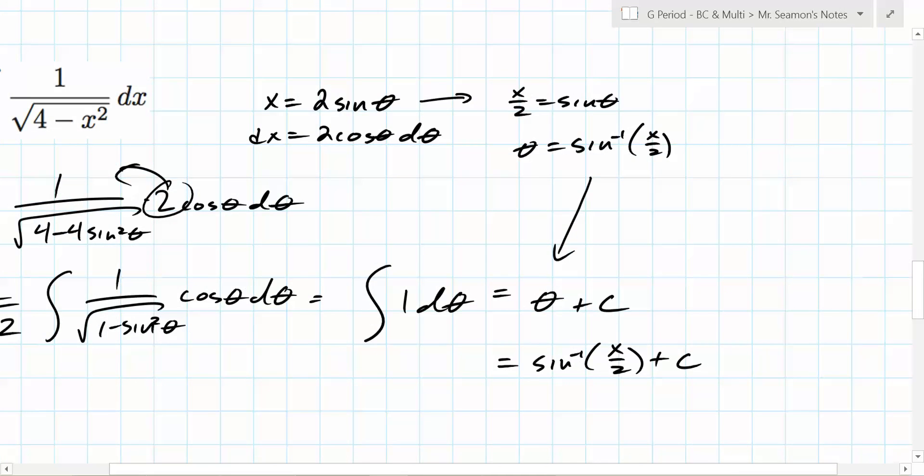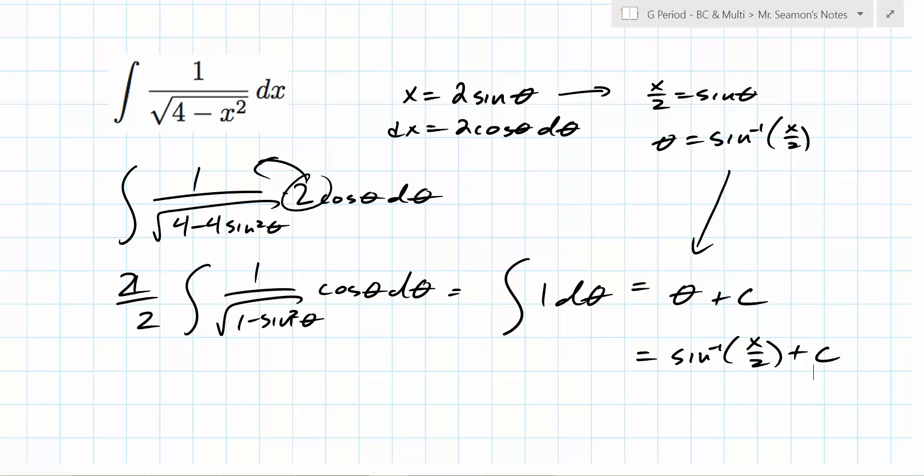So you plug that in, and you end up with sine inverse of x over 2 plus C. So all we did there was add in one little thing, which was this is still a trig substitution. It's still using the same identity, but the setup, you add a little bit to this. You have to be really careful. You have to be super careful about this.